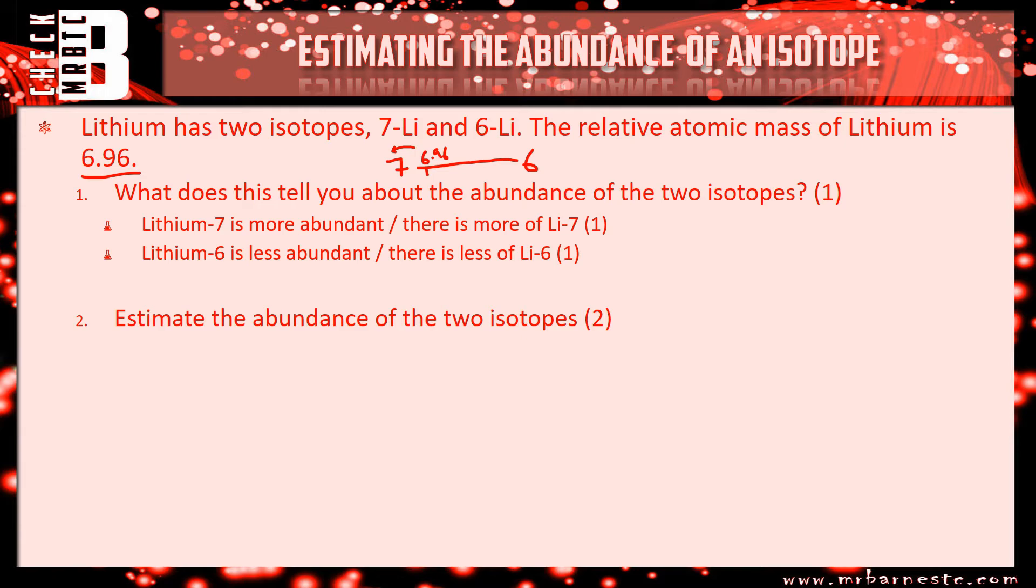Question 2, which says estimate the abundance of the two isotopes. This is where, again, we draw out, draw it the right way around this time. And I work out what my distance is. So what the difference between 6 and 7, which is 1. And then I place my 6.96 on, which is going to be around here. And for my largest abundance, I figure out the difference. So I'm going from 6 all the way up to 6.96. So that is 0.96 there. And for my smallest abundance, the distance between 7 and 6.96, which is 0.04.